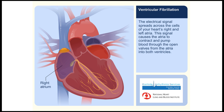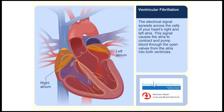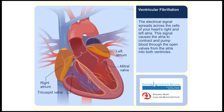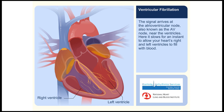The electrical signal spreads across the cells of your heart's right and left atria. This signal causes the atria to contract and pump blood through the open valves from the atria into both ventricles. The signal arrives at the atrioventricular node, also known as the AV node, near the ventricles, where it slows for an instant to allow your heart's right and left ventricles to fill with blood.